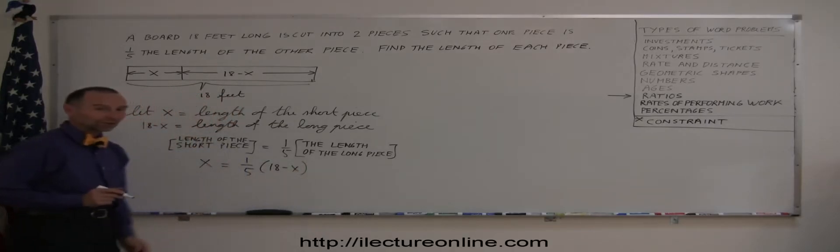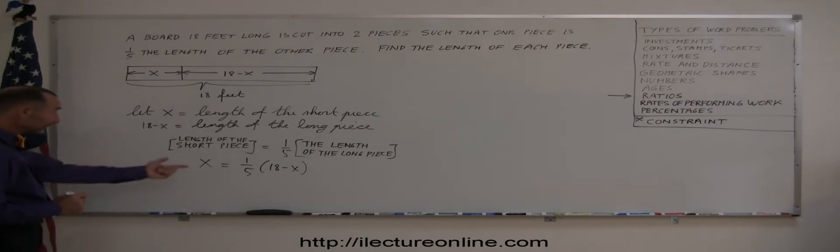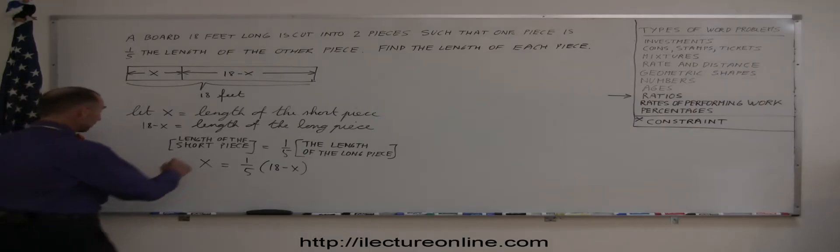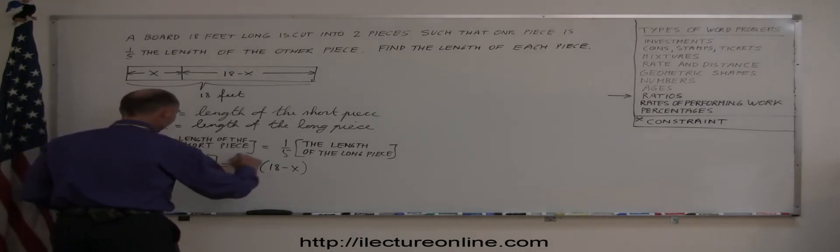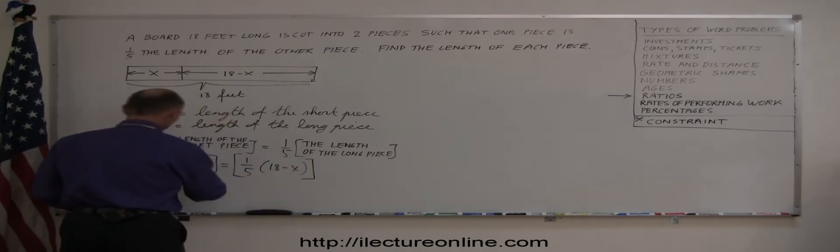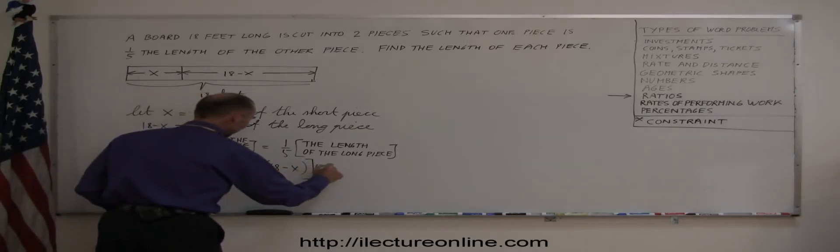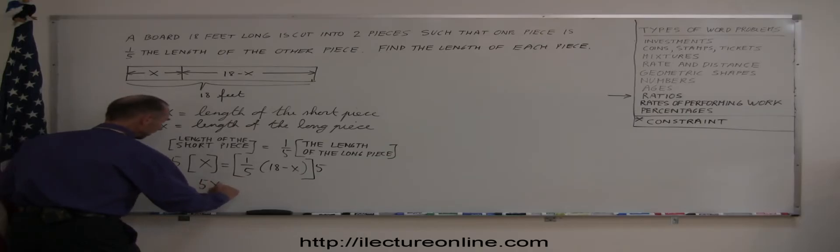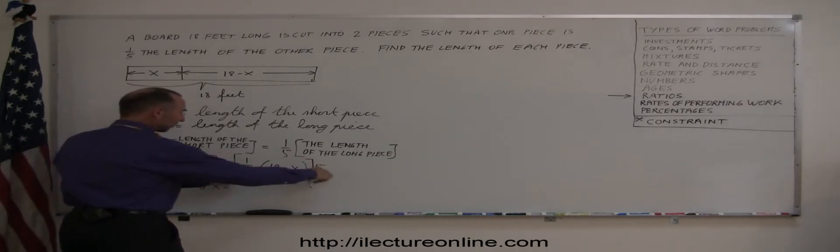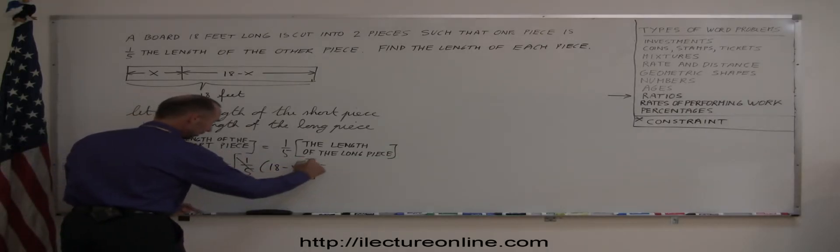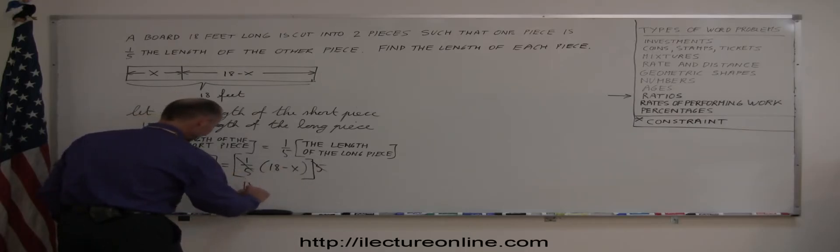And now we can go ahead and solve this problem. First thing you want to do is get rid of the fractions, so that means we're going to multiply both sides of the equation by five. So multiply the left side by five, the right side by five, so five times x gives me five x. Five times one-fifth, that cancels out, so I'm left with 18 minus x.